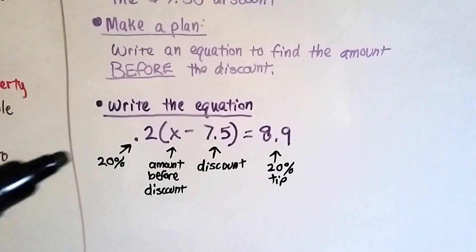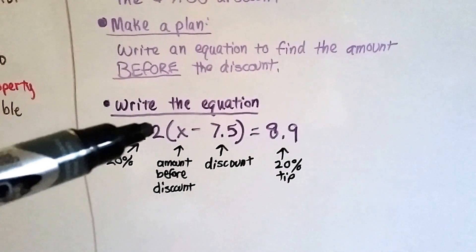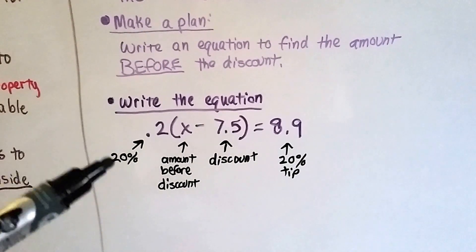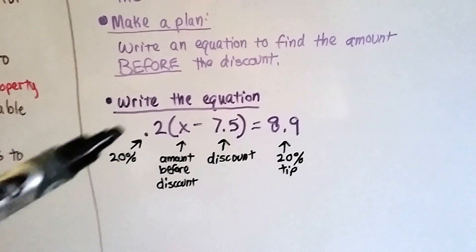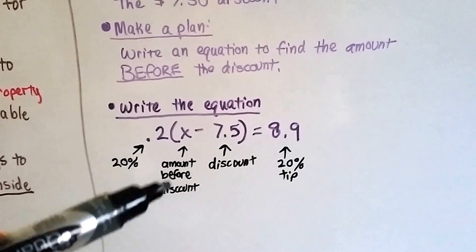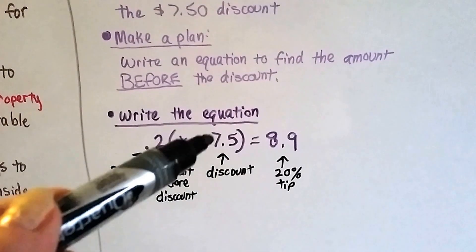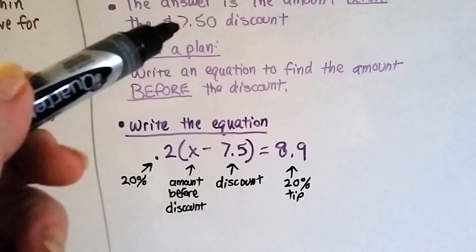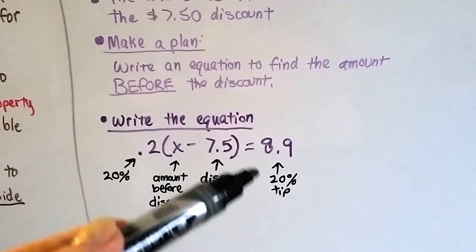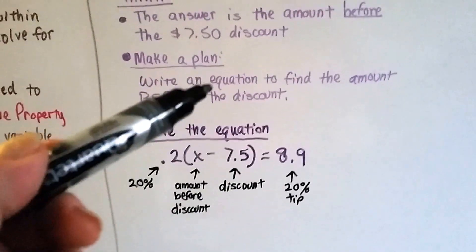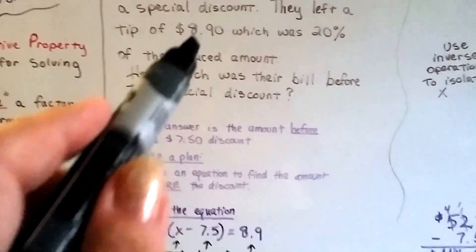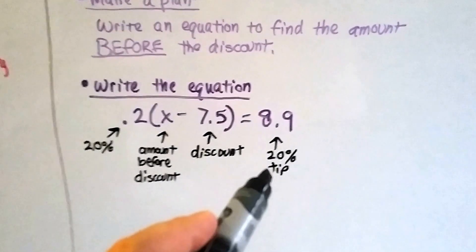So here's our equation. This is the 20%, the 0.2, because 20% is 0.20. It's one-fifth of a dollar. It's 20 cents of a dollar. So 0.2 is going to represent the 20%. The X is that amount before the discount that we're trying to find. The 7.5 is the $7.50 discount. We don't need to write that zero. 7.5 is good enough. 8.9 is the $8.90 tip that they left.